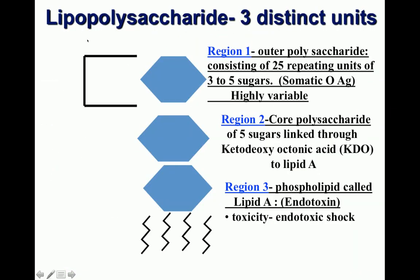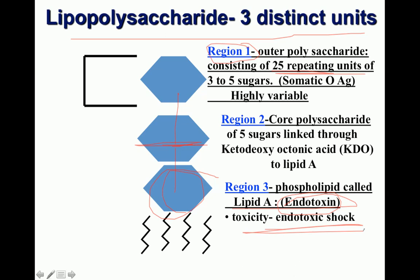The lipopolysaccharide has three regions. Region 1 consists of 25 repeating units of 3 to 5 sugars - the somatic O antigen - highly variable and responsible for antigenic diversity among species. Region 2 is the core polysaccharide connecting regions 1 and 3. Region 3 is lipid A - a phospholipid, the most important region, an integral part of the gram-negative cell wall also known as endotoxin, responsible for endotoxic shock.